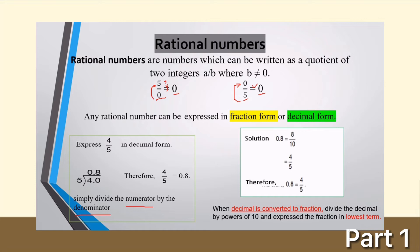How about changing from decimal form to fraction form? When a decimal is converted to a fraction, you divide the decimal by the powers of 10 and express the fraction in lowest terms. For example, 0.8 is read as 8 tenths. How many decimal places? One. So you are going to use the power of 10.